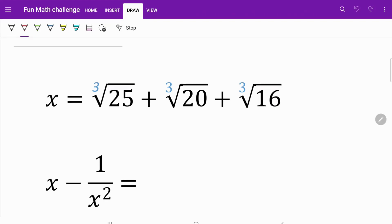In the following question, we are given x equal to the sum of the cube root of 25, 20, and 16. In turn, we are going to find the difference between x and 1 over x squared.